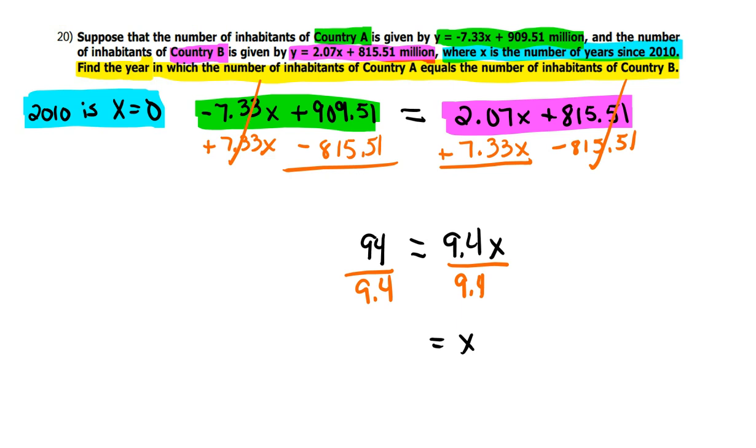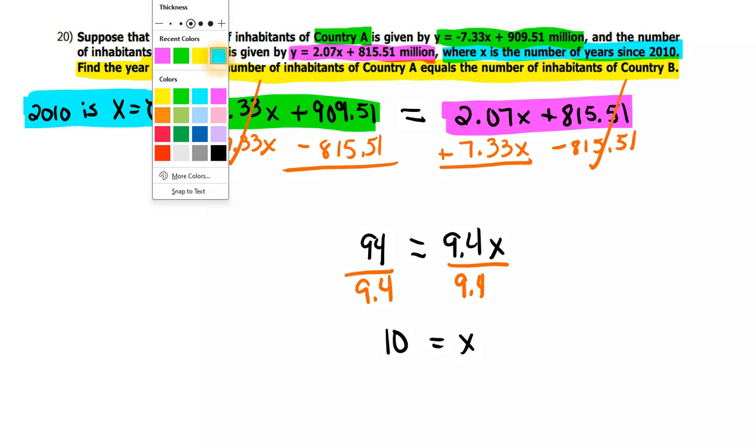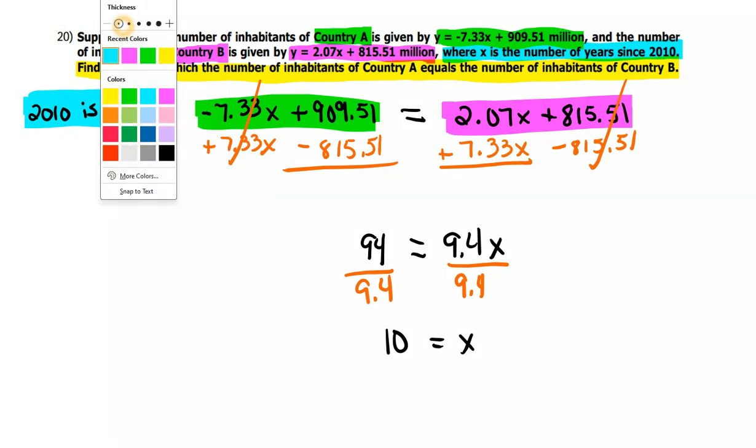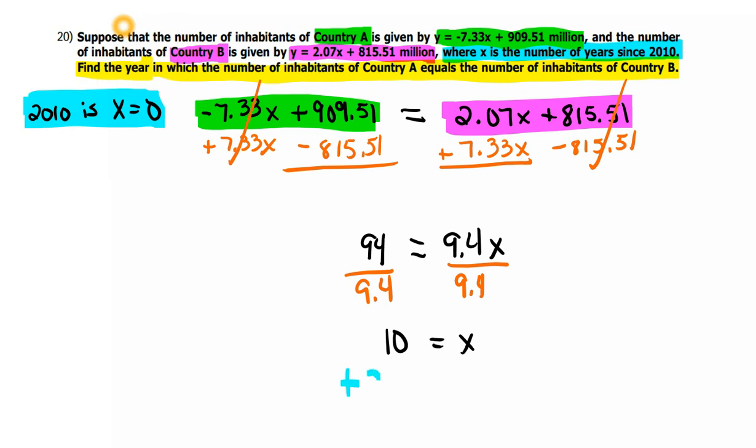remember this is X, which is the number of years after 2010. So when I get an answer of X equals 10, I have to go back to the fact that it is after 2010. So I'm going to have to add 2010 to this so that my answer is the year 2020.